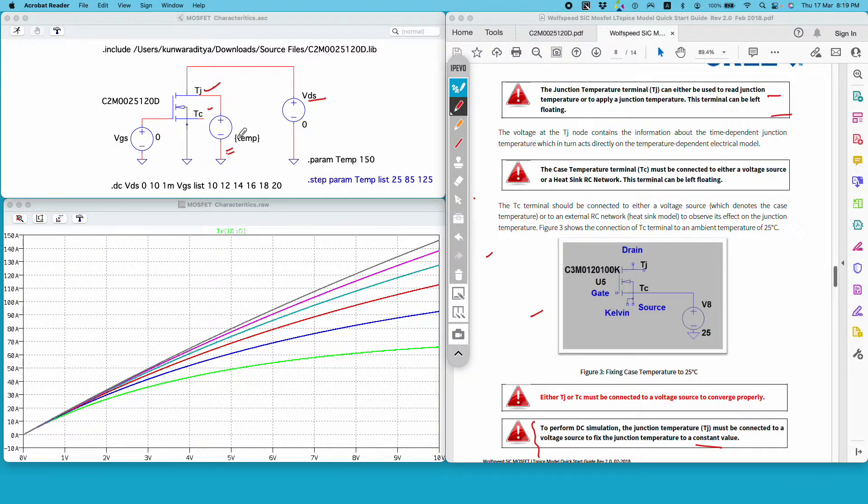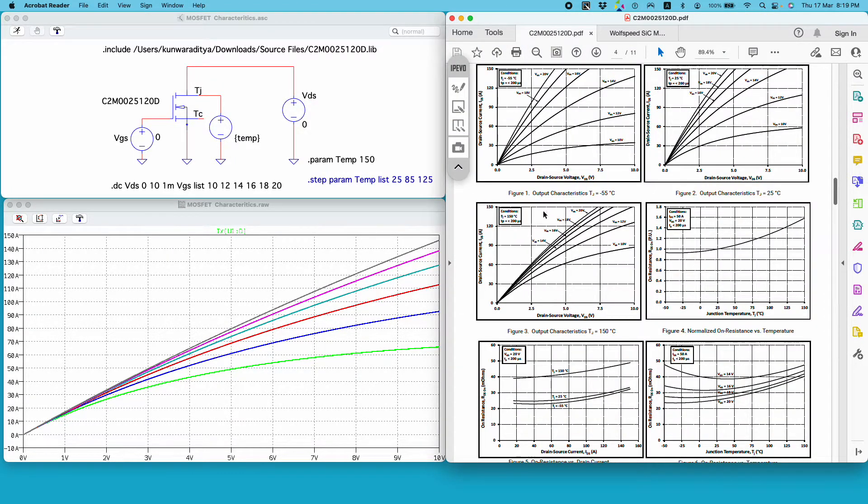The voltage setting here represents the temperature setting or the temperature of the junction. So I am using this variable temp to vary the temperature of the junction. For now I have kept it at 150 degrees Celsius because this plot is for 150 degrees Celsius.